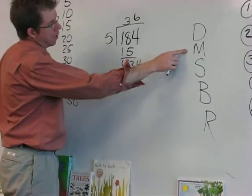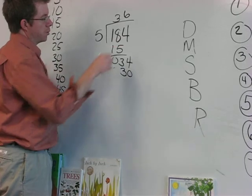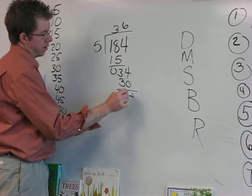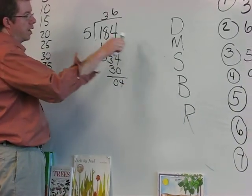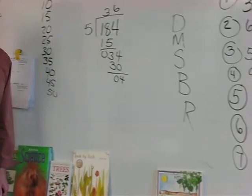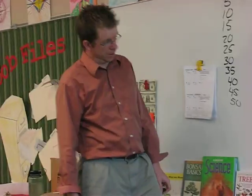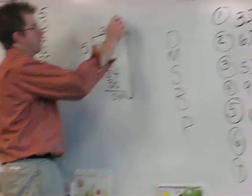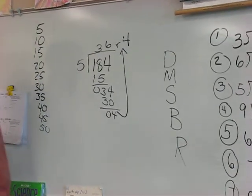Five times six. Now I multiply. Thirty. Then I subtract. And I bring down, but there's nothing else to bring down, so what's that tell me? Remainder. That's my remainder. We just solved it.